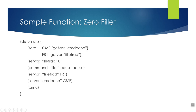Then we set FILLETRAD to zero — even if it was previously 1.5 or another value. We run the fillet command with two pauses for user input to select the first and second objects. After filleting, we clean up: use setvar to change FILLETRAD back to FR1 and turn CMDECHO back on to CME. princ at the end keeps things clean. That's 'playing neatly' — changing settings, using them, and restoring everything to how it was before the routine ran.